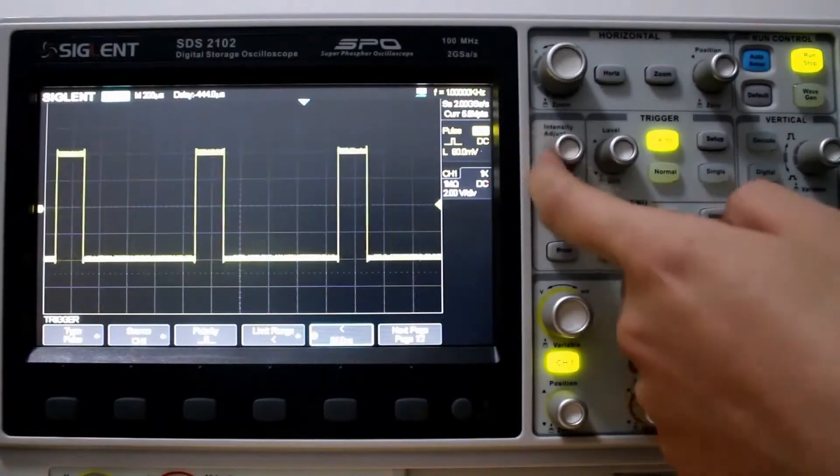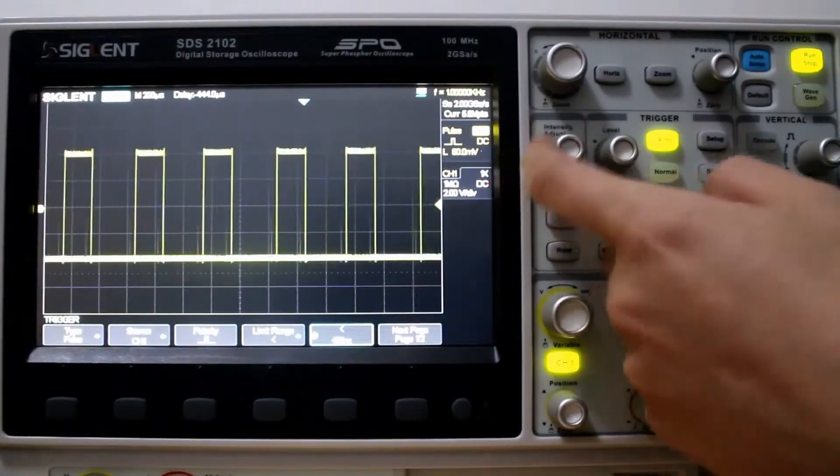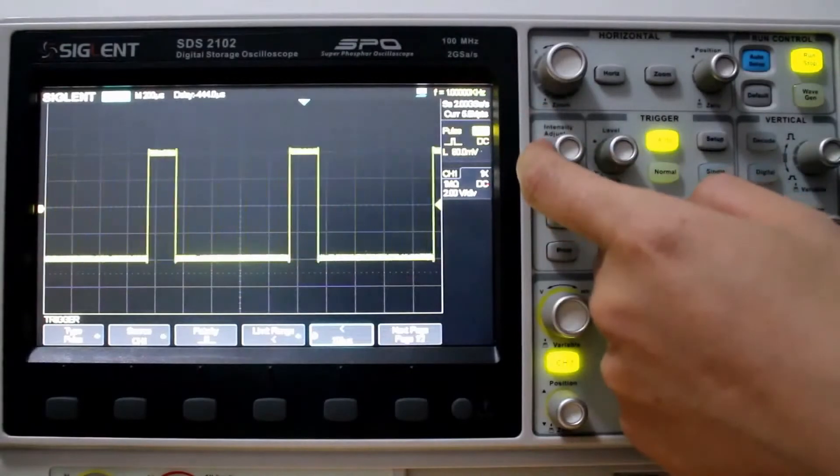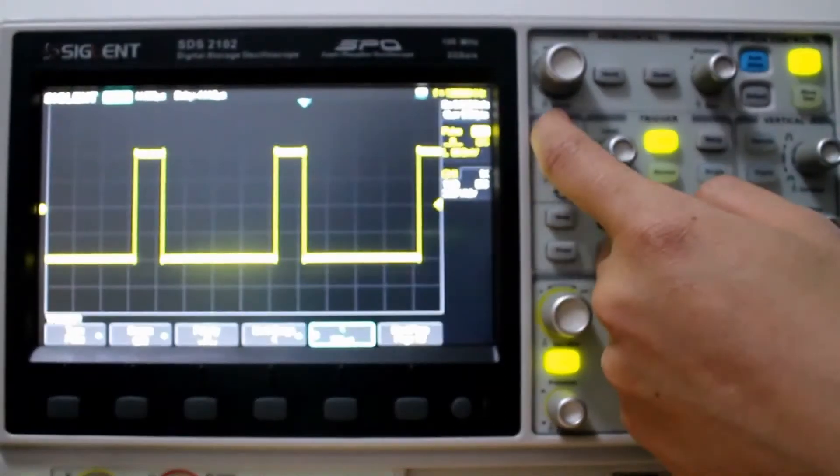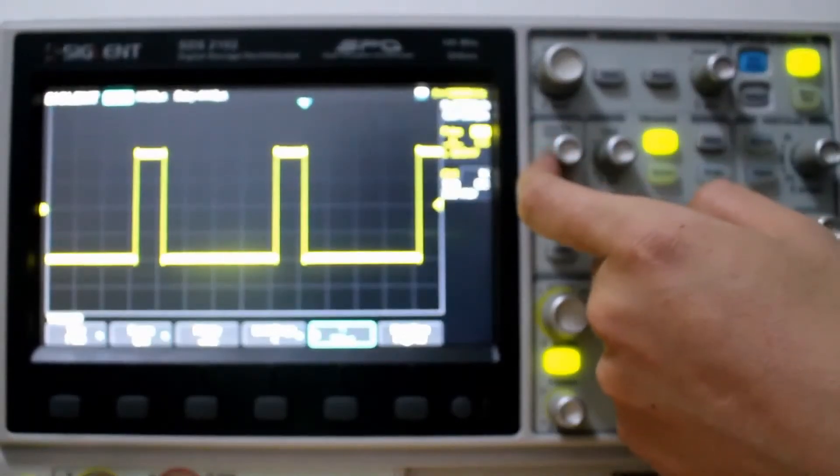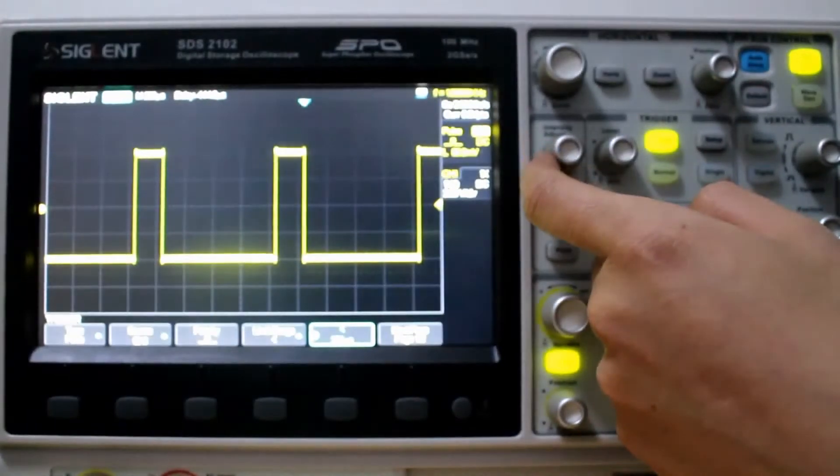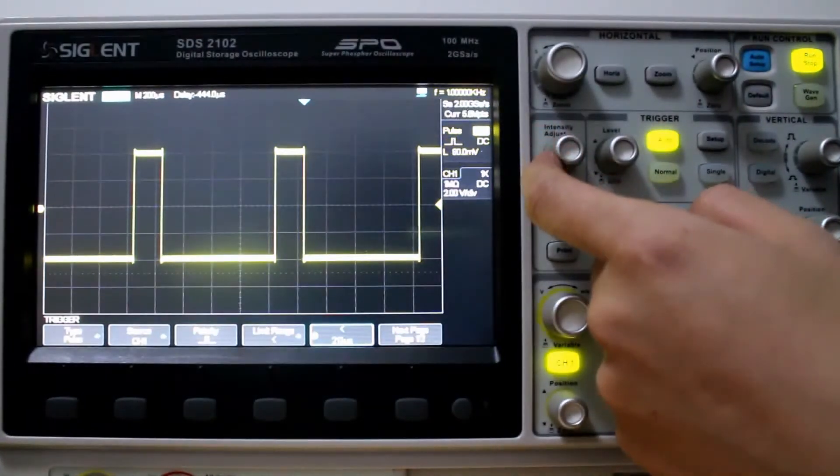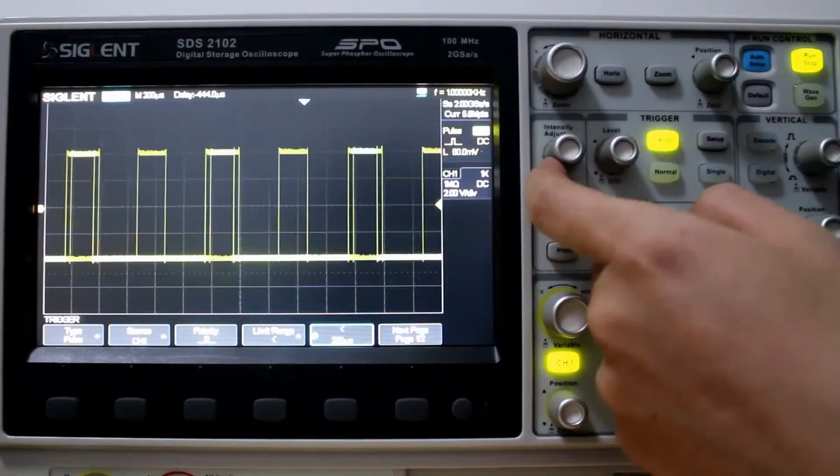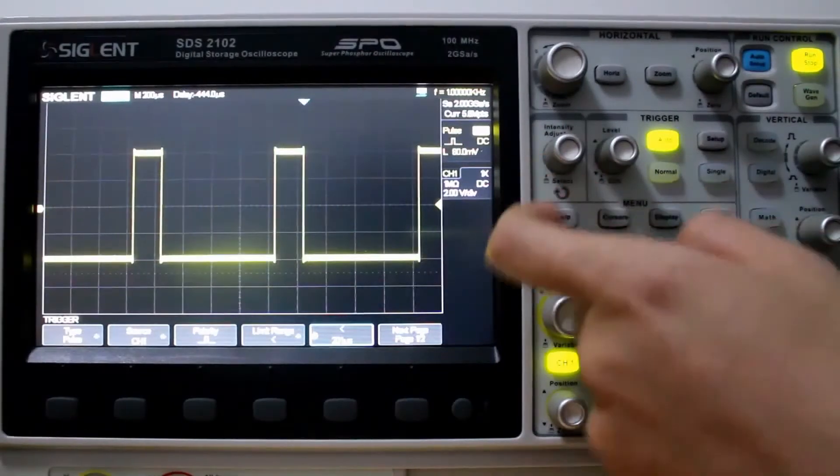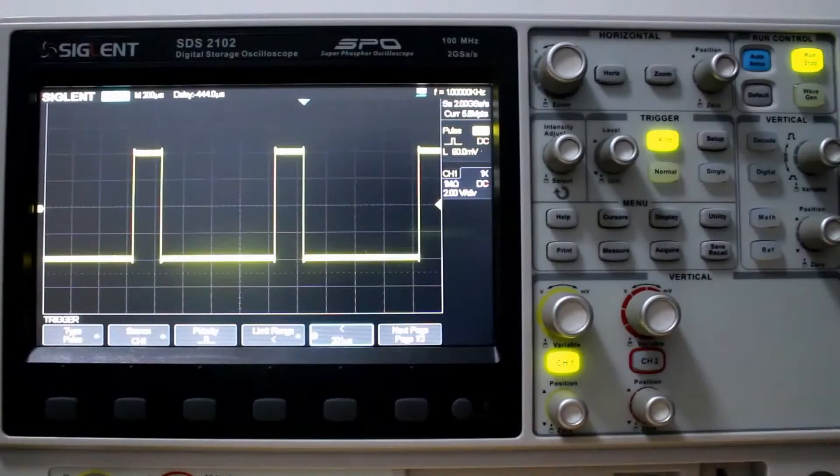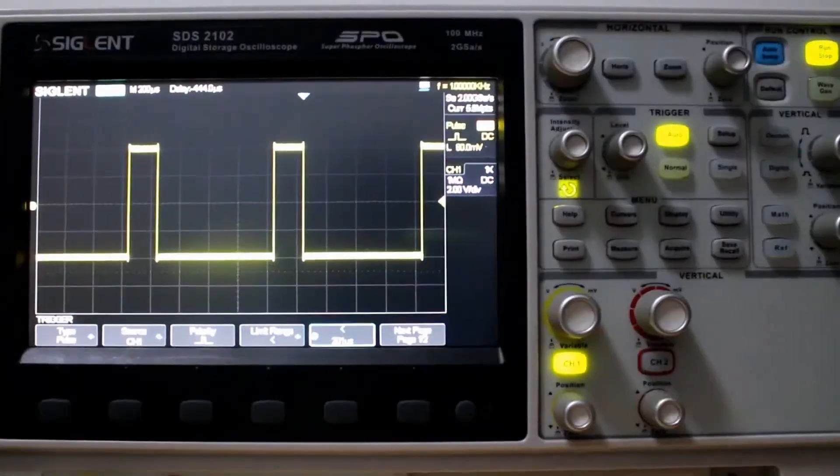Now let's adjust the time to about 200 microseconds and see what the time is. So 218. Almost there. 204. 203. 202. 201. 200. So it's about 201. 201 microseconds. For each pulse. About one division.